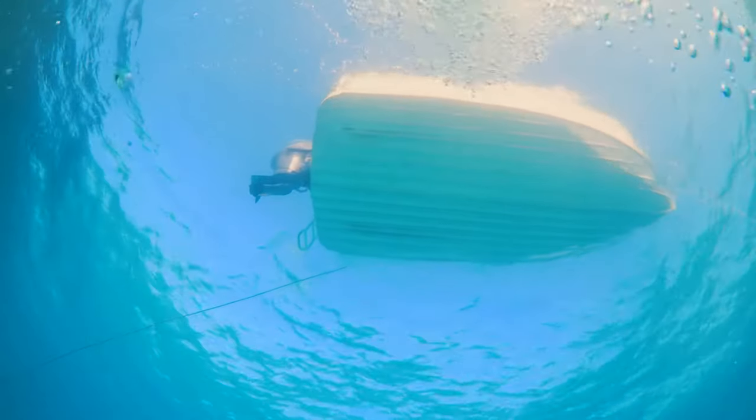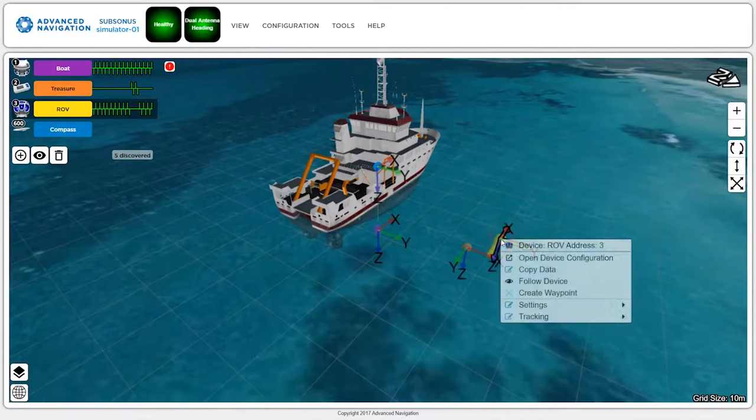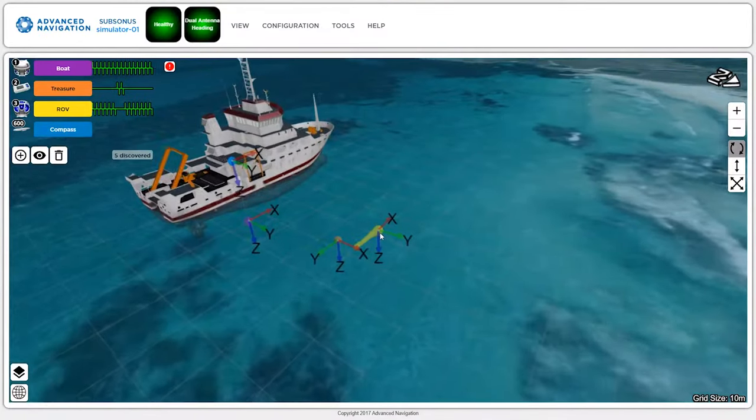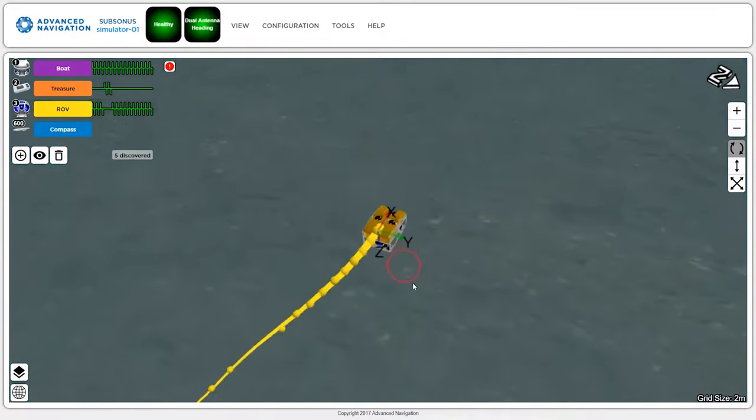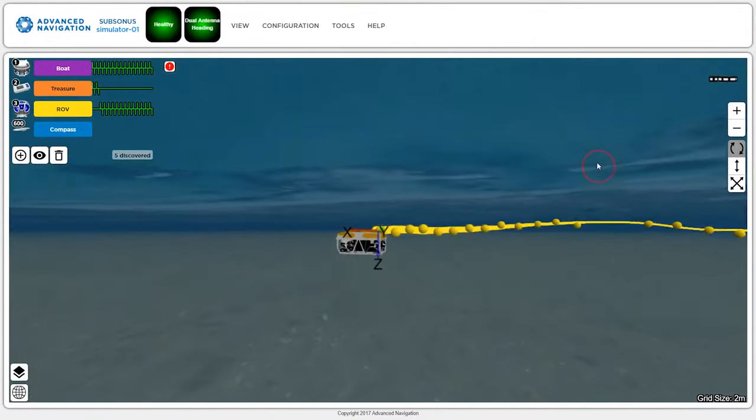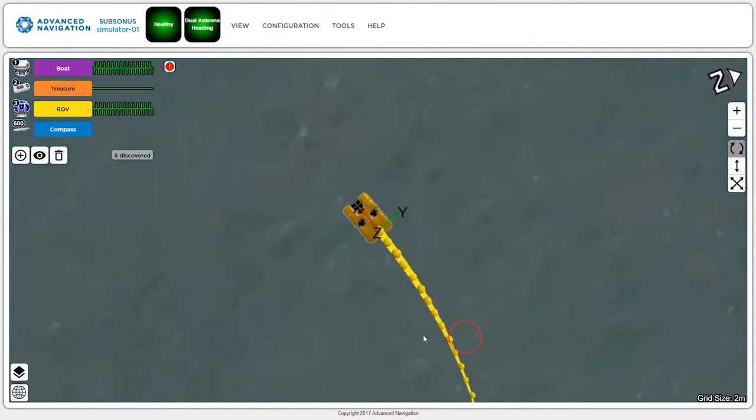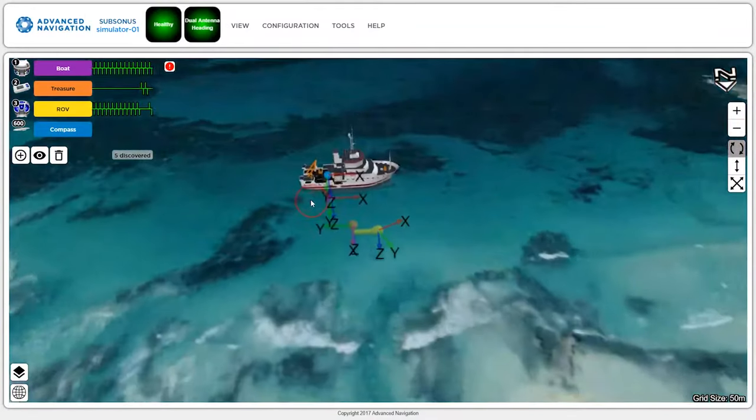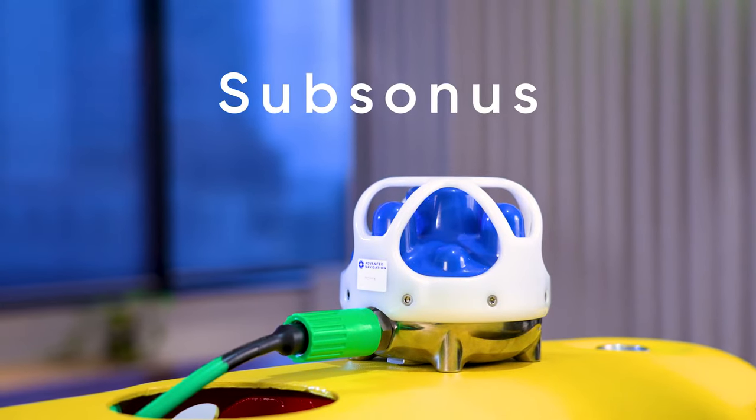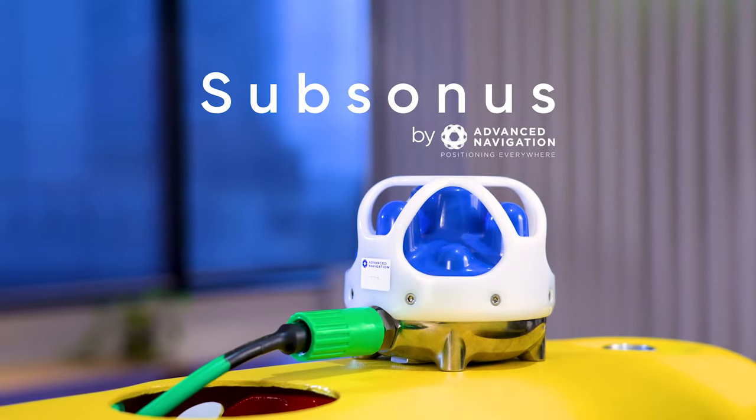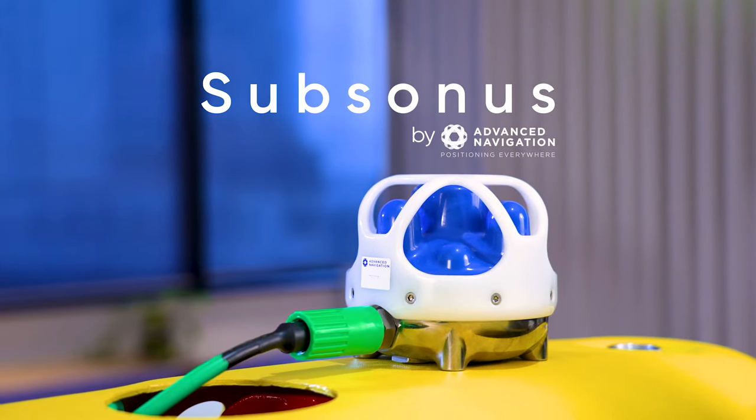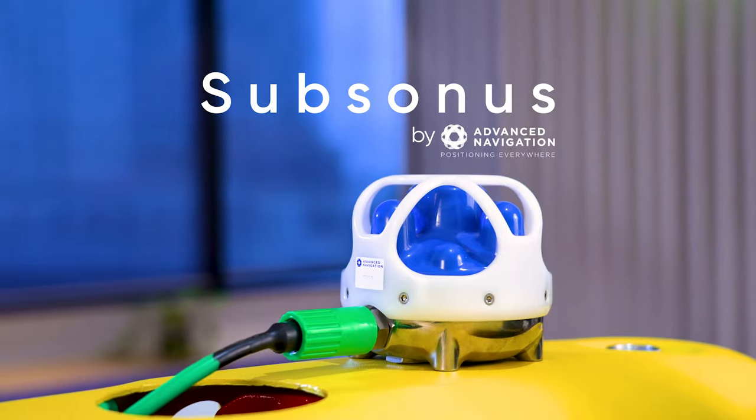You can now simultaneously track hundreds of underwater assets without the need for industrial computers, external sound velocity sensors, or additional inertial navigation systems. Subsonus by Advanced Navigation. For more information and a free trial request, visit advancednavigation.com.